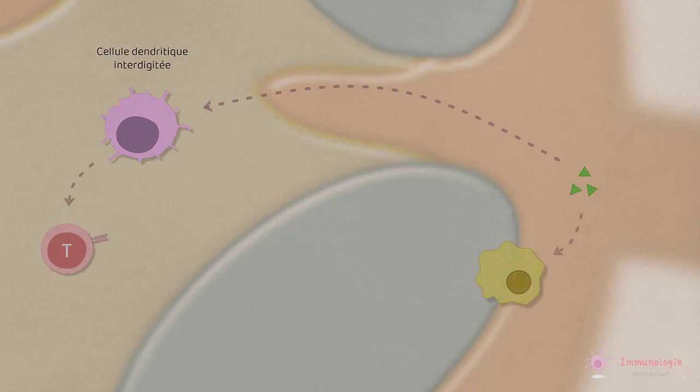En ce qui concerne les antigènes qui sont transportés vers les ganglions sous forme libre, ce sont les cellules dendritiques résidentes dans les ganglions, appelées interdigitées, qui vont se charger de leur apprêtement et de leur présentation. D'autres antigènes sont capturés par les macrophages du sinus sous-capsulaire, puis transportés sans apprêtement à travers les follicules vers les cellules B.